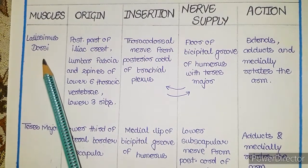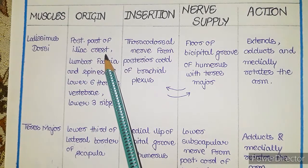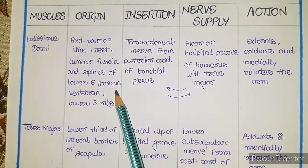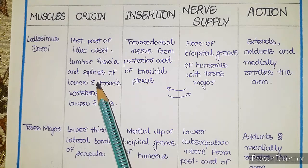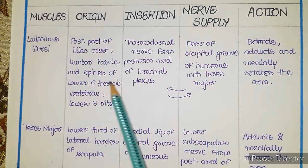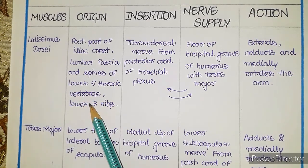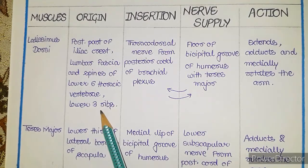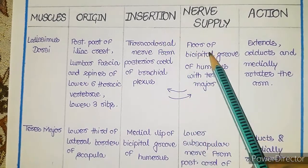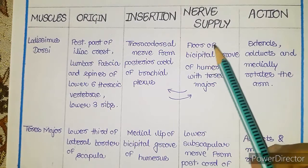The next muscle is the latissimus dorsi. It originates from the posterior part of the iliac crest, the lumbar fascia, and the spines of the lower six thoracic vertebrae. We have twelve thoracic vertebrae, and this muscle originates from the lower six. It also originates from the lower three ribs — the 10th, 11th, and 12th — since we have twelve pairs of ribs.